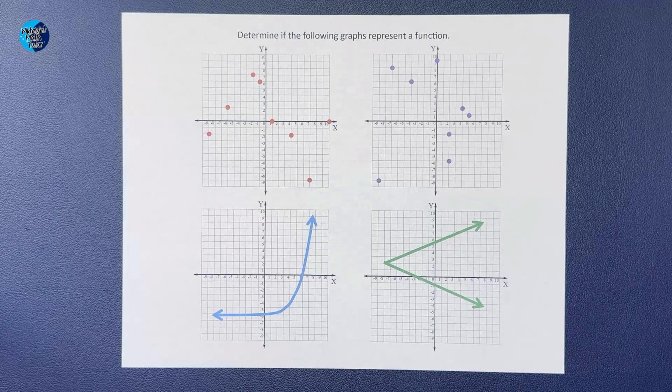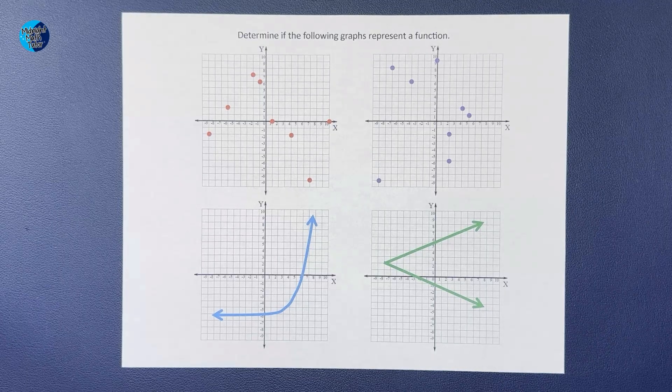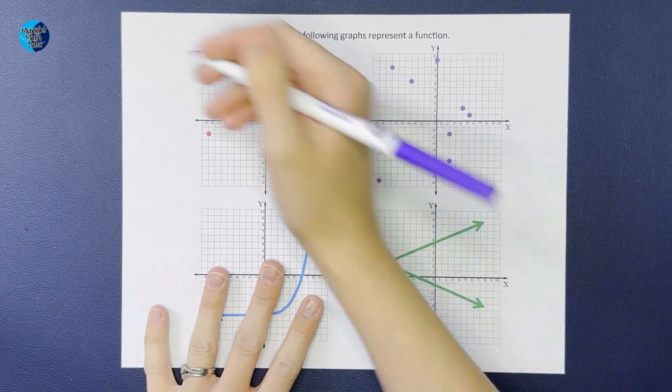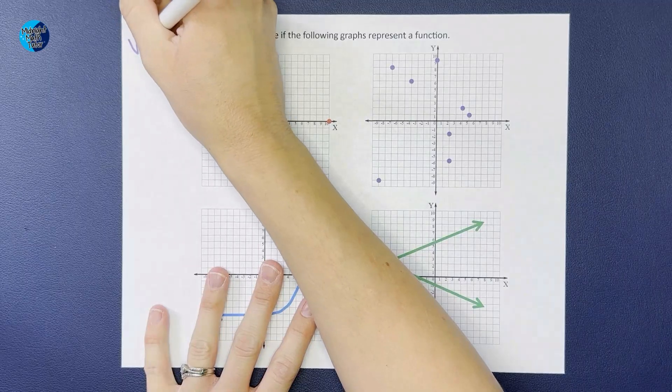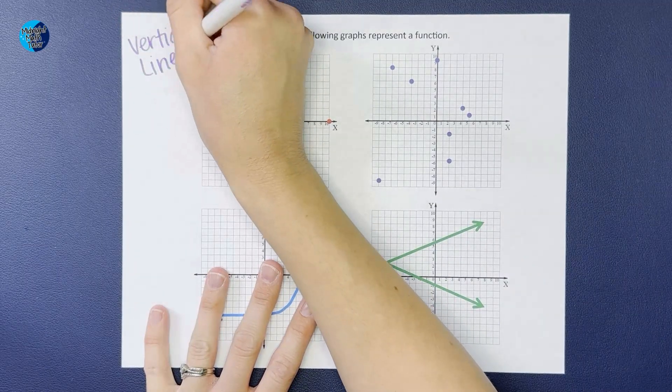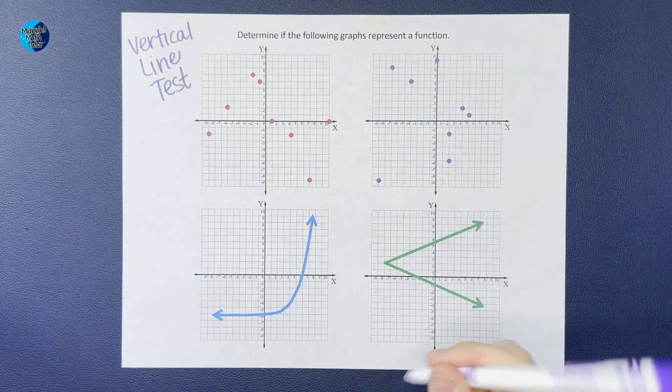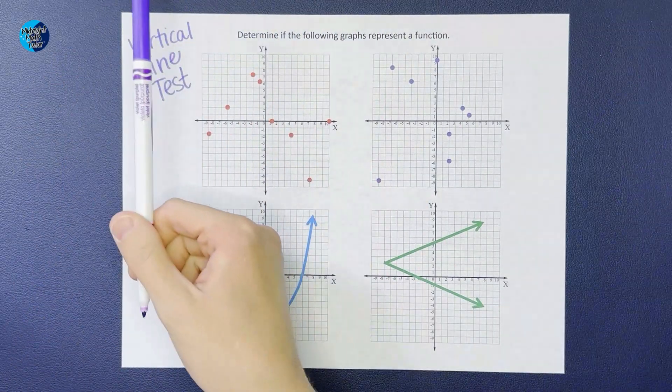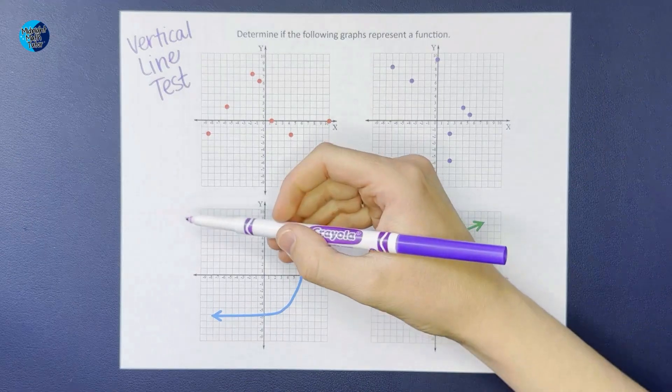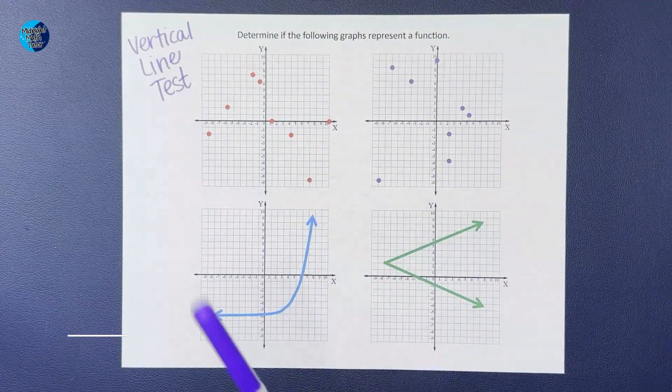When we're looking at graphs, it's pretty easy to visually tell if it is a function. We are going to use something called the vertical line test. To do the vertical line test, you just need something vertical - it can be your hand, a pencil, a marker, or some people even like to draw right on their graph a vertical line.